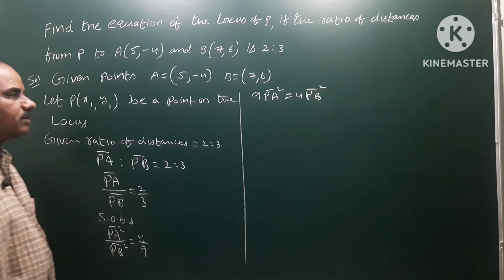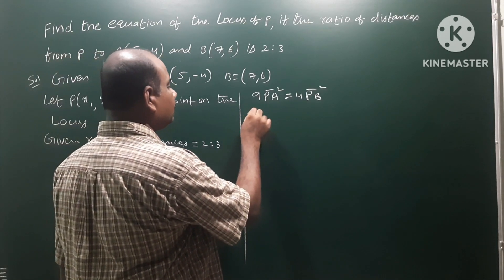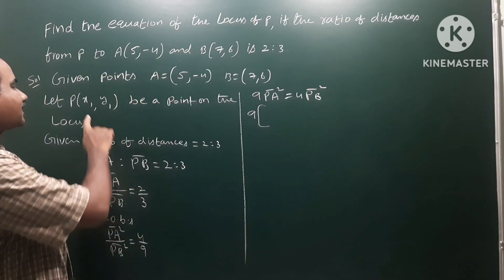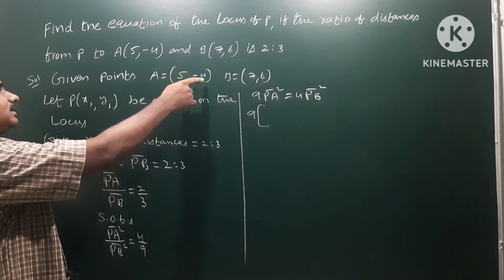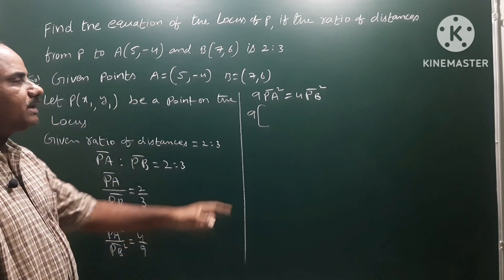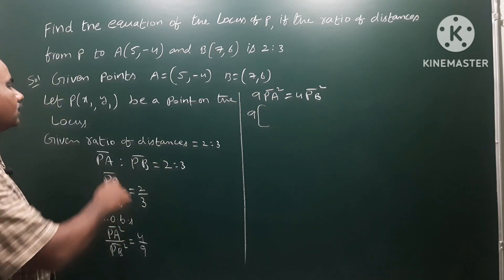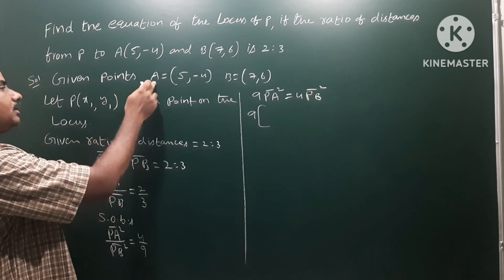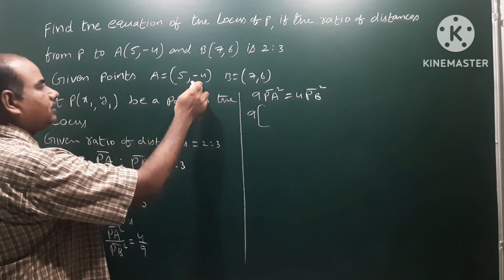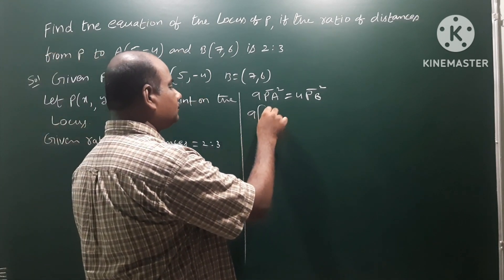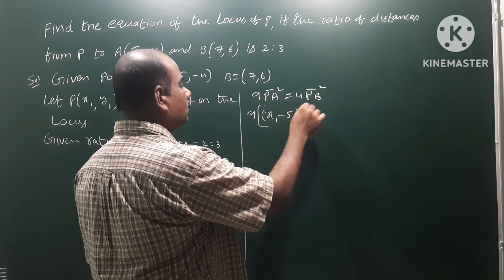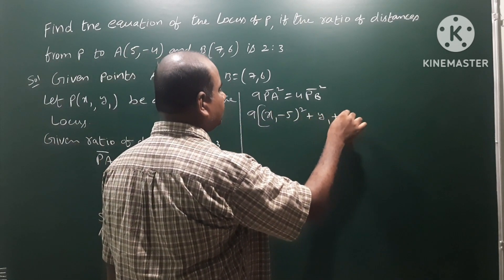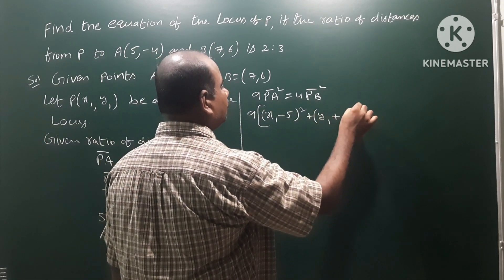So 9 into PA square is equal to 4 PB square. Using the distance formula, PA is the distance between P(x1, y1) and A(x2, y2), which is x1 minus x2 whole square plus y1 minus y2 whole square. Since we already have the square on both sides, the square root cancels.